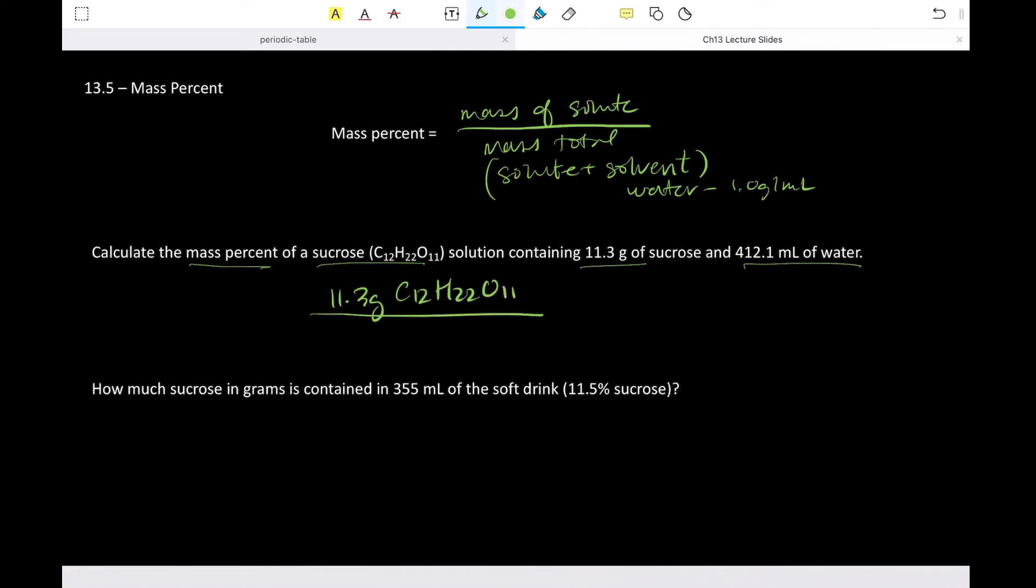So we're going to take our 11.3 grams of sucrose plus our 412.1 grams of water. And that's going to be our total. And that's going to, oh, times 100.